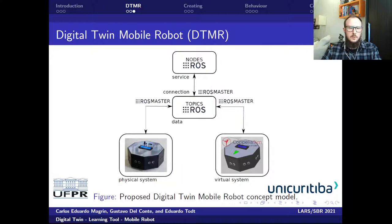Our Digital Twin mobile robot concept model uses a physical system — the real mobile robot — and a virtual system — the robot model in a simulator platform. The service involves integration between the host nodes, data involves exchange of host messages by topics, and connection involves data exchanging in cyber-physical systems through the host master.